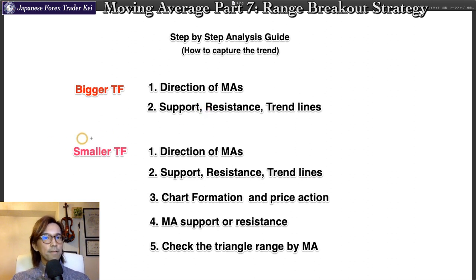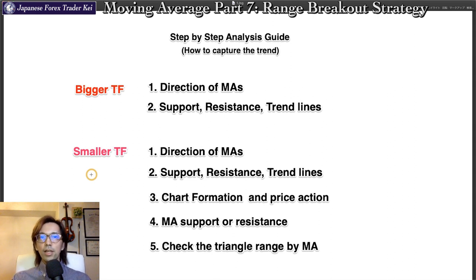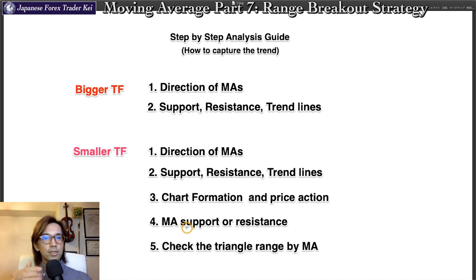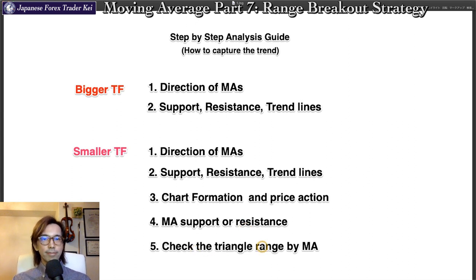Then you go down to the lower time frame chart and check the direction of the moving averages as well, seeing if they are all pointing towards the same direction, and also draw lines for further confirmations of the trading edge on the market. You also look at the price action of the lower time frame chart and check if the price has been resisted or supported by the moving average, because when it is, that can be another confirmation of the persistent trend. Also check if you see a moving average triangle on the market.